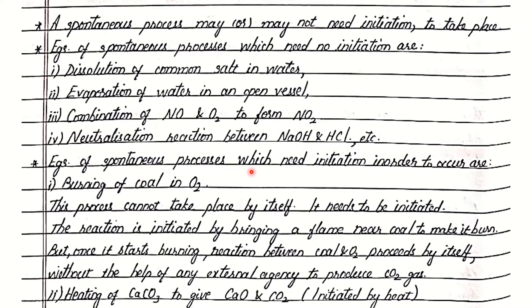Examples of spontaneous processes which need initiation in order to occur are burning of coal in oxygen, and heating of calcium carbonate to give calcium oxide and carbon dioxide. Coal cannot catch fire in oxygen by itself — you need to bring a flame near coal to make it burn. But once coal catches fire, the reaction between coal and oxygen proceeds by itself without the help of any external agency to produce carbon dioxide. Similarly, you need to initiate the decomposition of calcium carbonate by heating it; once heated, it proceeds to decompose by itself to give calcium oxide and carbon dioxide as products without the help of any external agency.